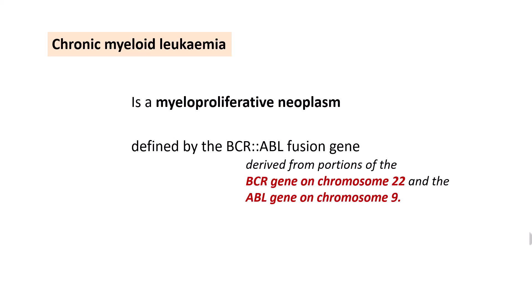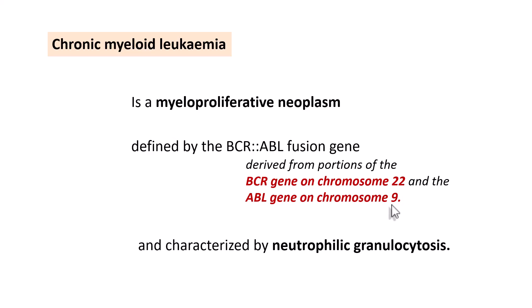This fusion gene is basically derived from portions of the BCR gene on chromosome number 22 and the ABL gene on chromosome number 9. This fusion gene is derived from both the BCR gene and ABL gene on the 22nd and 9th chromosomes respectively. Most importantly, CML is characterized by neutrophil granulocytosis.